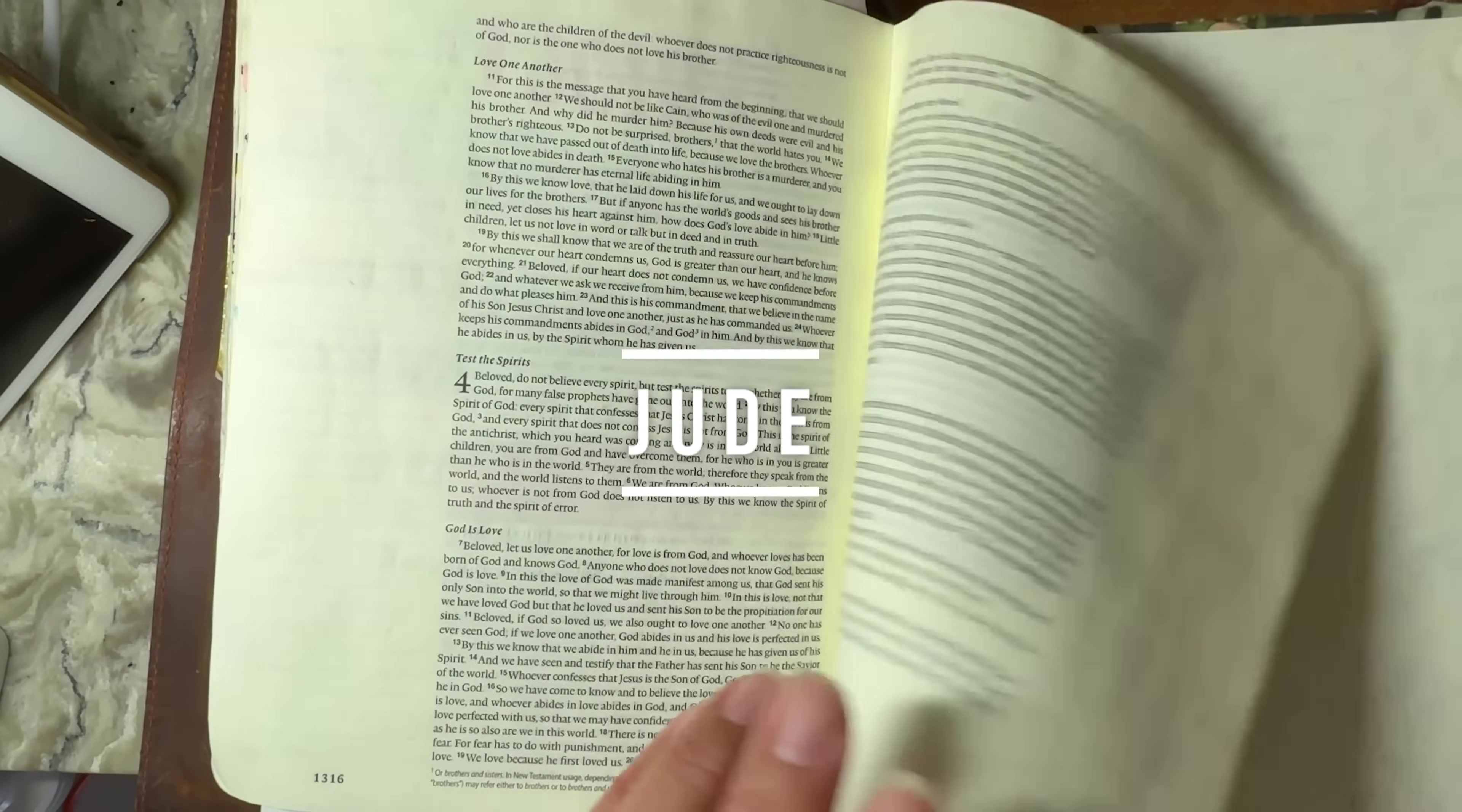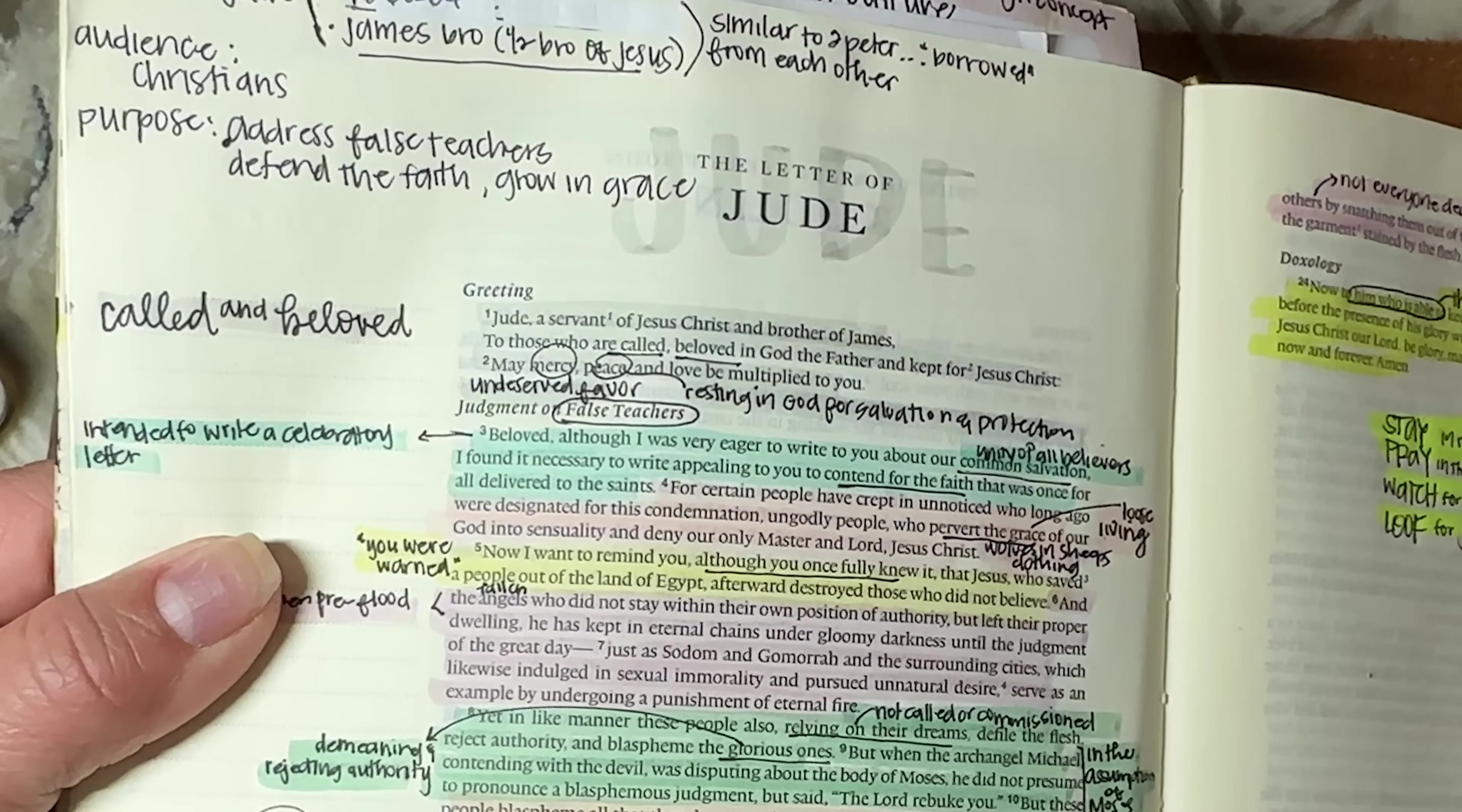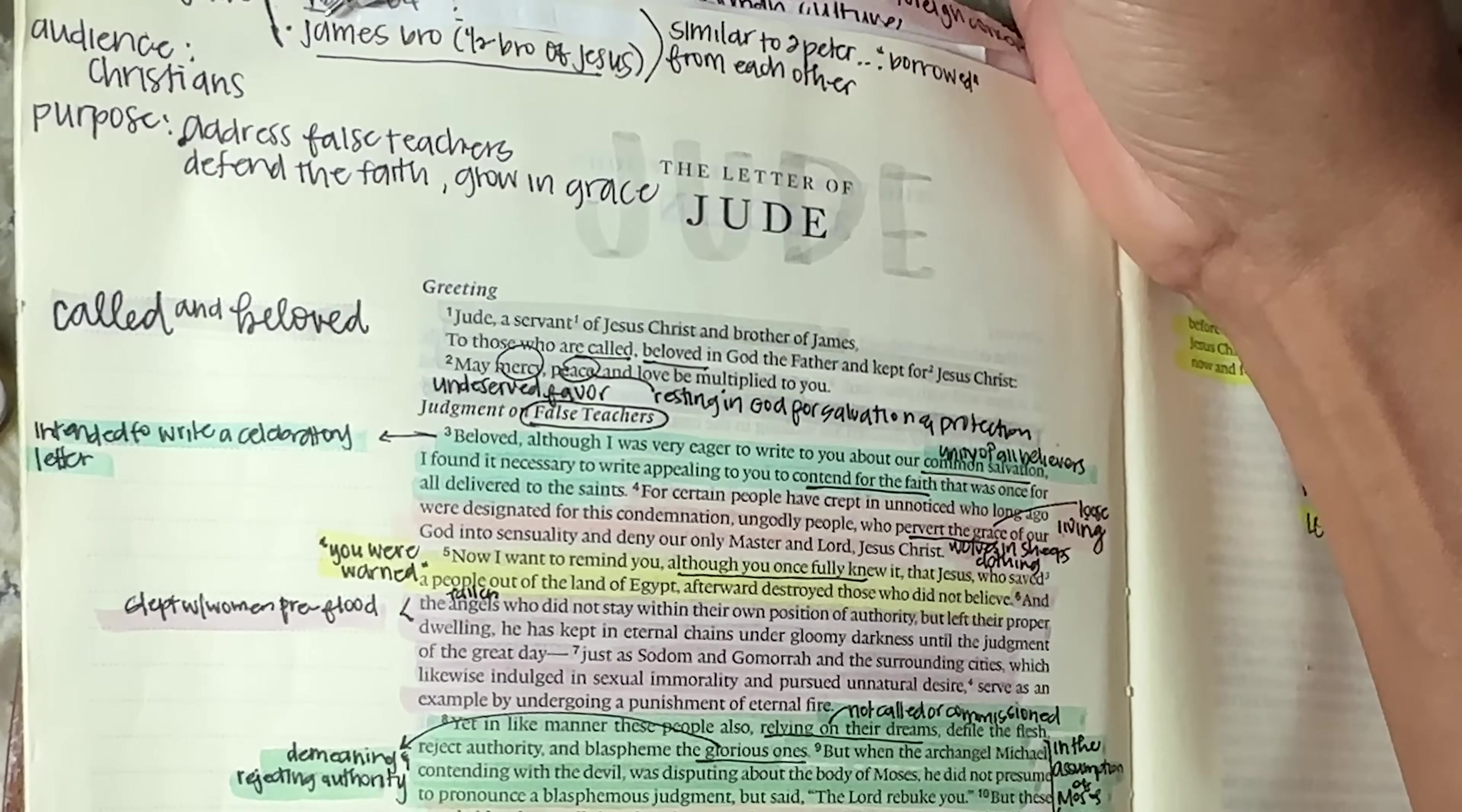And now we'll turn over to Jude, who obviously is the author of Jude, likely written sometime between AD 60 and 64. And Jude is actually James's brother or the half brother of Jesus. And so like I said earlier, this is very similar. You will hear very similar themes and words being spoken here in Jude as spoken in second Peter. So they may have borrowed the words from each other. It's not a bad thing. We should be borrowing words of righteousness from each other. Audience again, being Christians, the purpose to address the false teachers, to defend the faith and to grow in grace, which is what Peter ended with in his epistle.